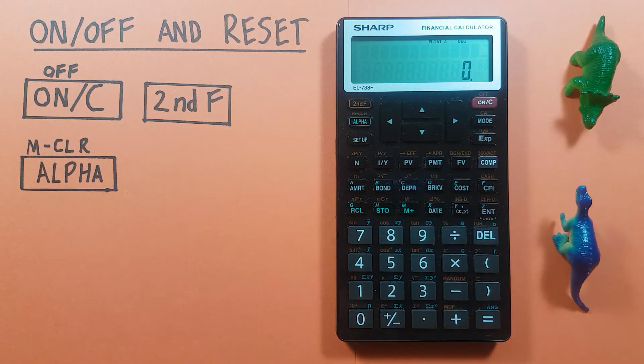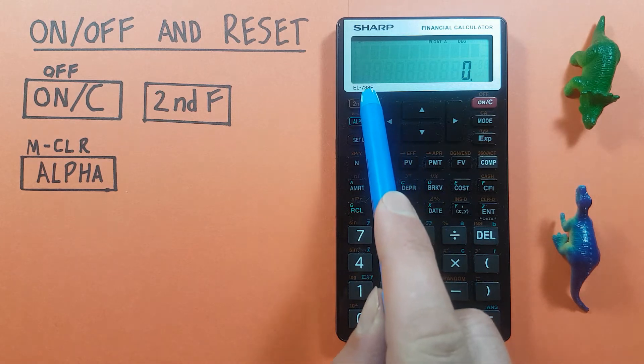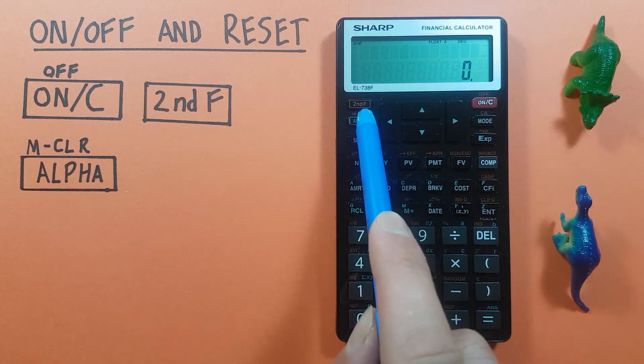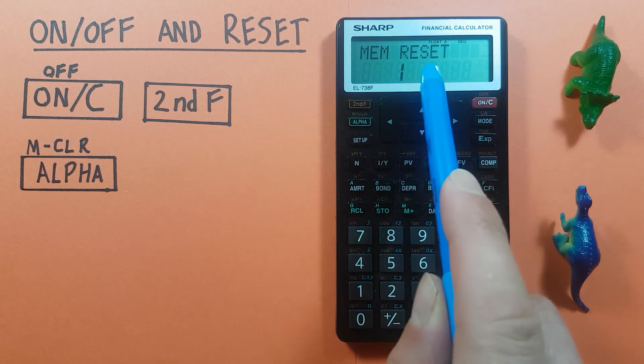Now if you've run into a problem with settings and want to reset your calculator, you can do that two ways. The first way is with the keys. To do that, you press the second function key and then the alpha key. That'll bring you to this menu here.